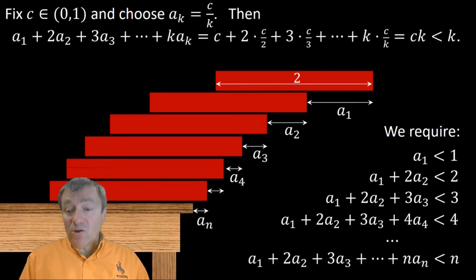Now the K-th inequality, I'm showing you here at the top of the screen, the K-th inequality has a left side which simplifies as C plus C plus C plus C, K times, in other words, C times K. So as long as C is less than 1, the K-th inequality will be satisfied. And all of the inequalities will be satisfied this way. So the stack of bricks will not fall over.